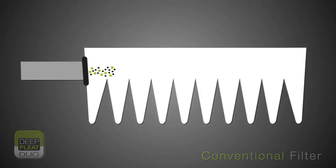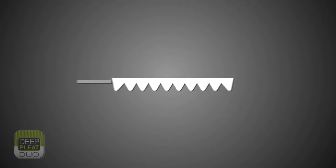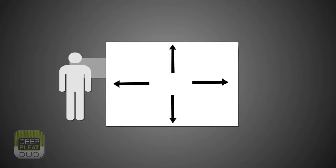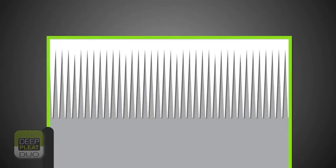Most bag filters have an efficiency of typically F6 and a surface area of around 2 square metres. The higher efficiency F8 media and extra surface area of the deep pleat pre-filter give added protection and therefore longer life for the more expensive HEPA filter.